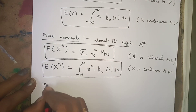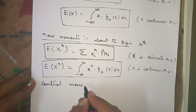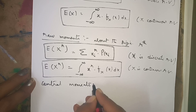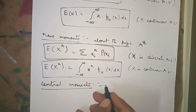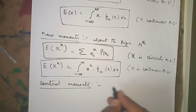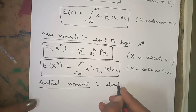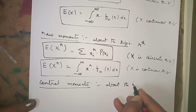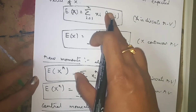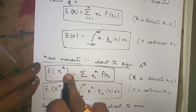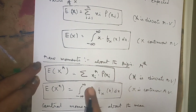Now central moments. Raw moments are about the origin; central moments are about the mean. Remember the same base formulas. For raw moments we replaced x with x^r; similarly for central moments we replace x with x minus x-bar, the whole to the power r.